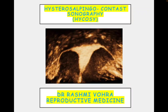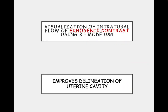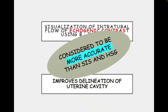Hysterosalpingo contrast sonography, also known as HyCoSi, allows visualization of intra-tubal flow of echogenic contrast using B-mode sonography. It improves delineation of the uterine cavity and is considered to be more accurate than SIS and HSG.